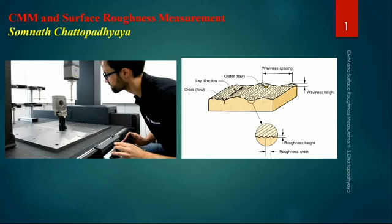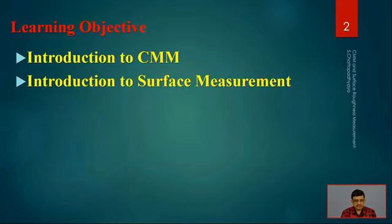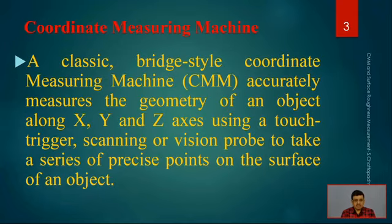Good morning friends, today we are going to discuss coordinate measuring machine and surface roughness measurement. This is related to first-year courses for manufacturing process, taught irrespective of any branch. Our two main components are CMM — coordinate measuring machine — and surface roughness measurement technique, both important metrologies associated with measurement.